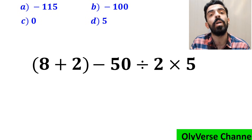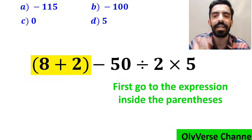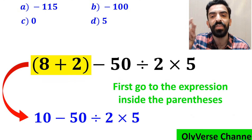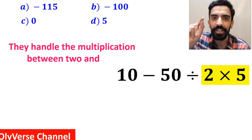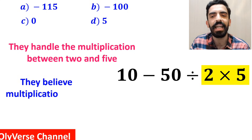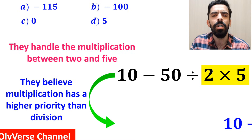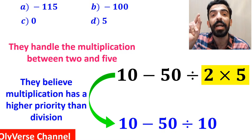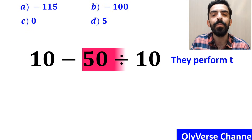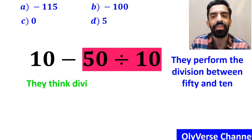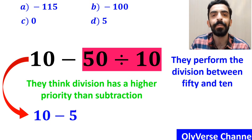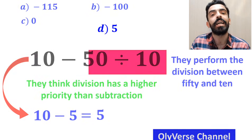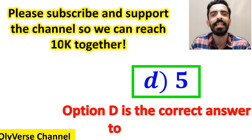Also, some other people when solving this question first go to the expression inside the parentheses and write this expression as 10 minus 50 divided by 2 times 5. In the next step, they handle the multiplication between 2 and 5 first, because they believe multiplication has a higher priority than division. So, they rewrite this expression as 10 minus 50 divided by 10. Then they perform the division between 50 and 10, because they think division has a higher priority than subtraction. So, they simplify this expression to 10 minus 5, which ultimately gives them the answer 5.